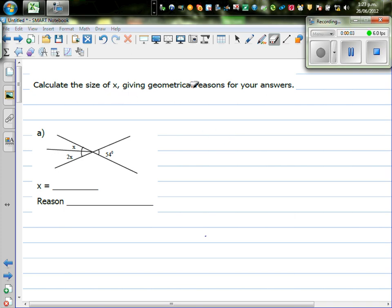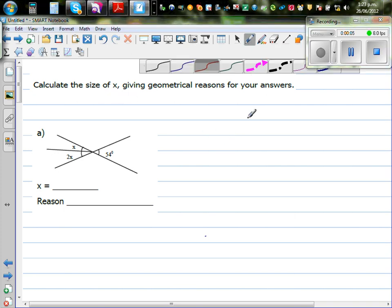Calculate the value of size of X, giving geometrical reasons for your answers. Now this is a figure, and these are two lines intersecting at this point. And you want to find the value of X. So this angle, if you look at it, is X plus 2X. So this angle would be 3X. And this angle is 54. I hope you know a rule when two lines intersect. They are called vertically opposite angles.